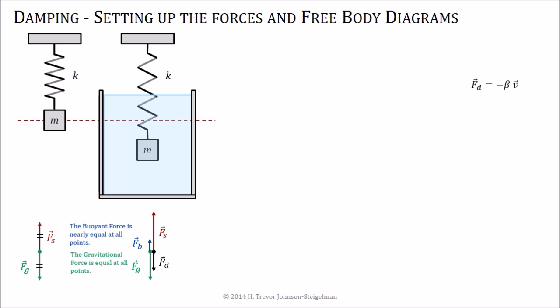Something to remember is that the buoyant force is nearly equal at all points unless you have something oscillating through a very large depth. The gravitational force is equal at all points. So that's going to shift this equilibrium point just a little bit either up or down depending on the size of the buoyant force. Because it's nearly equal, we can use that same trick we used with the regular spring system, and it turns out that the net spring force measured around that new equilibrium and the damping force are the only two that act. So we can just build our free body diagram around those two forces.